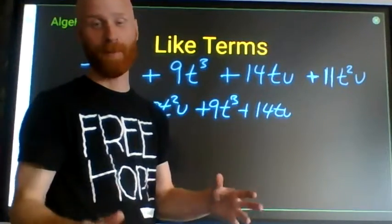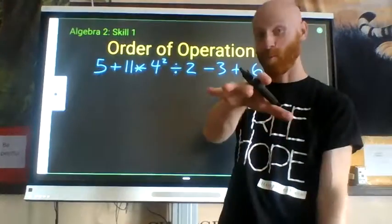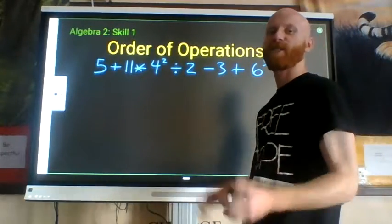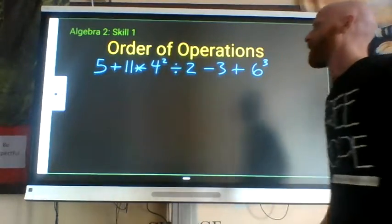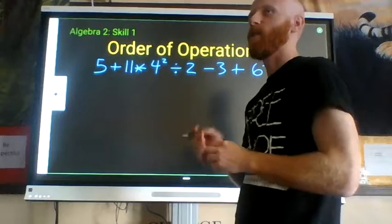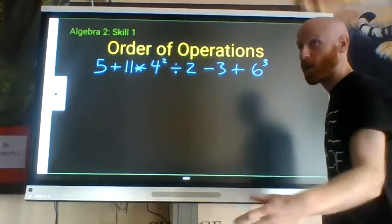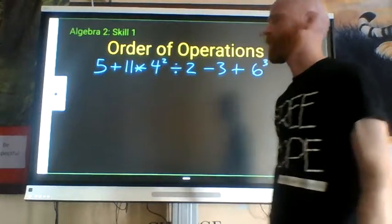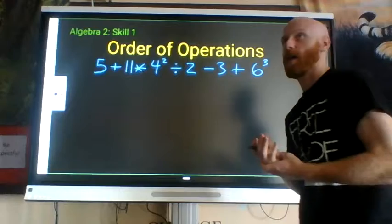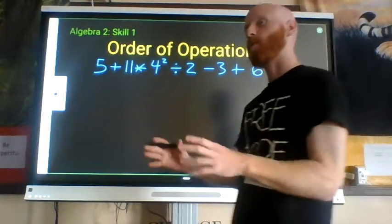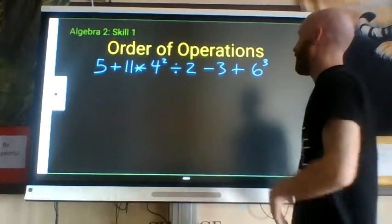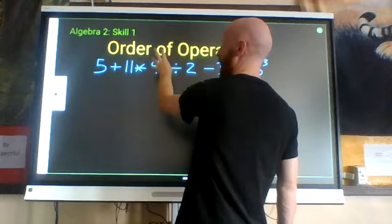Order of operations — learned way back in elementary school and repeated pretty much every year in math class. When you have multiple operations within an expression, you apply them from most powerful down to least powerful. The most powerful operations are exponents and roots (radicals). Second most powerful are multiplication and division. The least powerful are addition and subtraction.